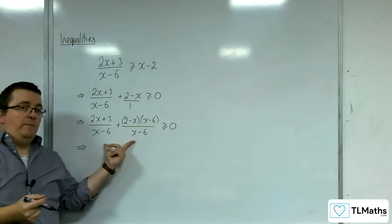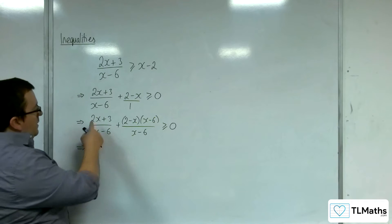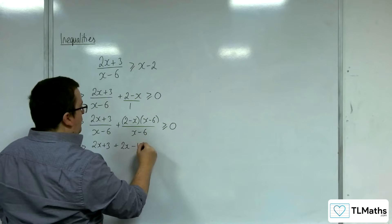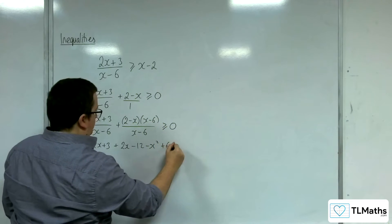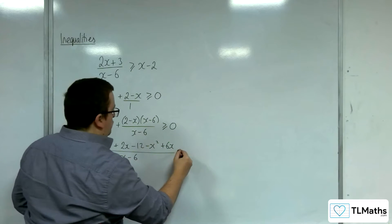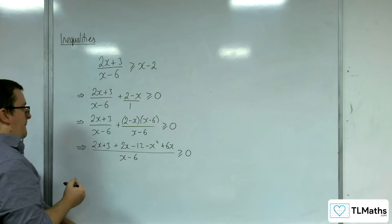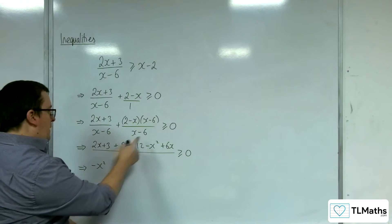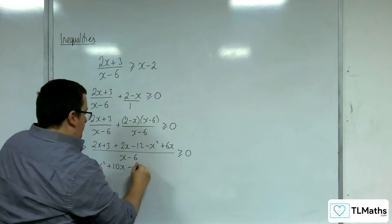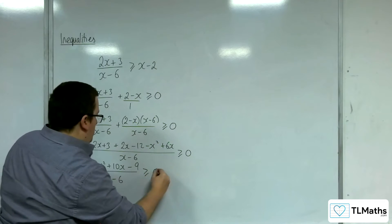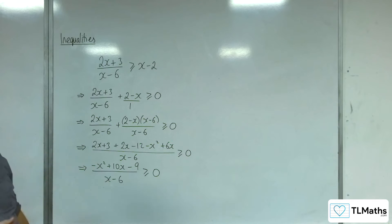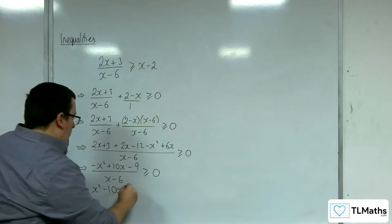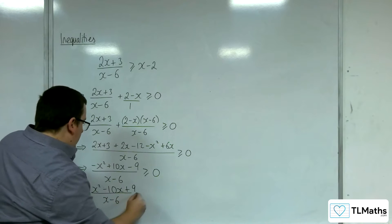Now I've got two fractions with the same denominator. Combining them: the numerator is 2x + 3, and expanding (2 - x)(x - 6) gives 2x - 12 - x² + 6x. So the numerator becomes -x² + 10x - 9, all over (x - 6) ≥ 0. I don't like that minus sign, so multiplying through by -1 gives (x² - 10x + 9)/(x - 6) ≤ 0.